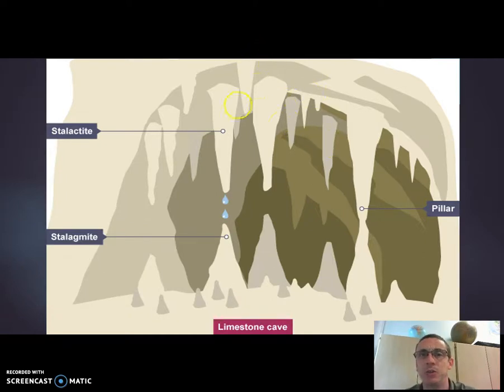And this tiny, tiny amount of limestone is going to be left behind, and then we're going to have another drip, and another, and another, and another. And it adds a tiny, tiny amount of limestone every single time. And then after hundreds, thousands of years, we form this large icicle shape of rock, which we refer to as a stalactite.